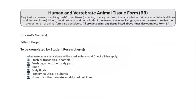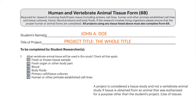At the top of Form 6B, students must fill out their name, or if it is a group project, all the students involved should list their names. Then students will fill out the whole title of the project. Next, the student or students will fill out question one, answering: what vertebrate animal tissue will be used in this study? A project is considered a tissue study and not a vertebrate animal study if the tissue was obtained from an animal that was euthanized for a purpose other than the student's project.